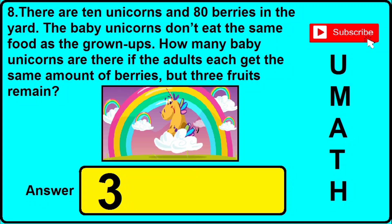In version 4 of question 8: there are 10 unicorns and 80 berries in the yard. Baby unicorns don't eat the same food as grown-ups. How many baby unicorns are there if the adults each get the same amount of berries but 3 fruit remains? The correct answer is 3, so just click 3 in the option.